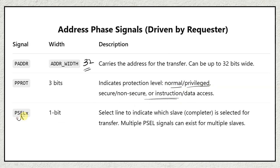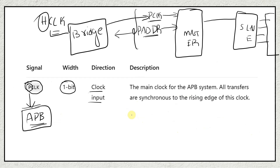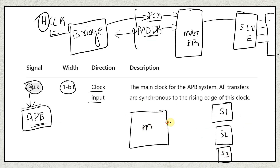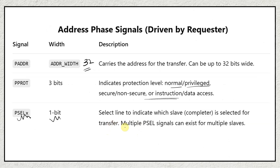The next signal is PSEL. It is 1-bit wide and is a select line to indicate which slave is selected for the transfer. Multiple PSEL signals can exist for multiple slaves. For example, if a master needs to communicate with slave 2, the master asserts the PSEL signal associated with slave 2. If it wants slave 1, it asserts PSEL for slave 1. Using PSEL, the master selects whichever slave it wants to communicate with.